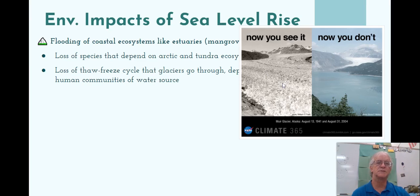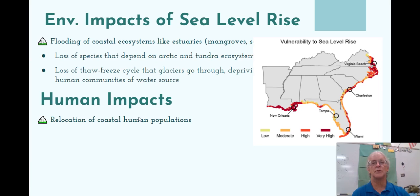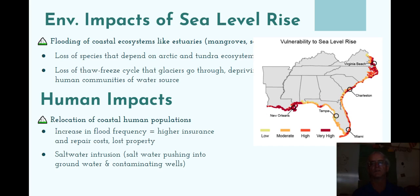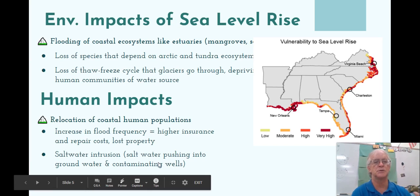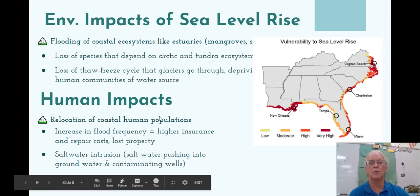This is a photo from Alaska — this is the same shot approximately 60 years apart, only 60 years apart. Human impacts include relocation of human populations. You can see that areas like India are going to be flooded, and it's estimated that multiple millions of people are going to have to move. New York City and New Orleans are all going to be flooded. Increased flood frequency means higher insurance and repair costs and lost property. Salt water intrusion into drinking water will occur because salt water is going to push in on the groundwater and contaminate the wells that supply the water.